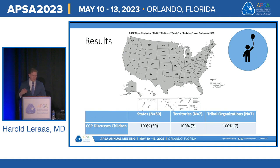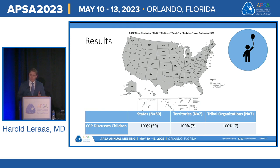Next, we assessed the inclusion of children in cancer control plans, defined simply as the use of the words child, children, youth, or pediatric. Thankfully, every state, territory, and tribal organization included children in their cancer control plan.